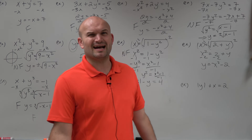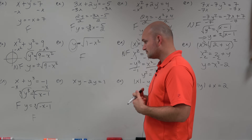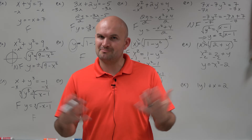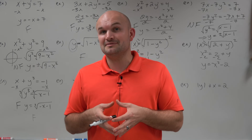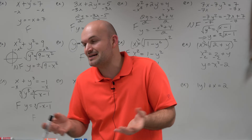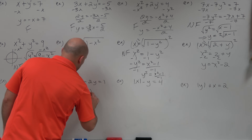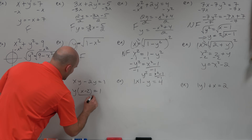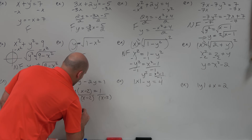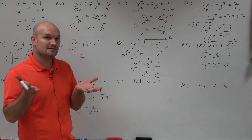Now we have two y's. When we want to solve for y, this produces a problem because we can't combine these two y's directly. However, we can factor out a common term. If I factor out a y, I get y times (x minus 2) equals 1. Now I can divide by (x minus 2), and I get y equals 1 over (x minus 2). That is solved uniquely, so we're all good — that's a function.